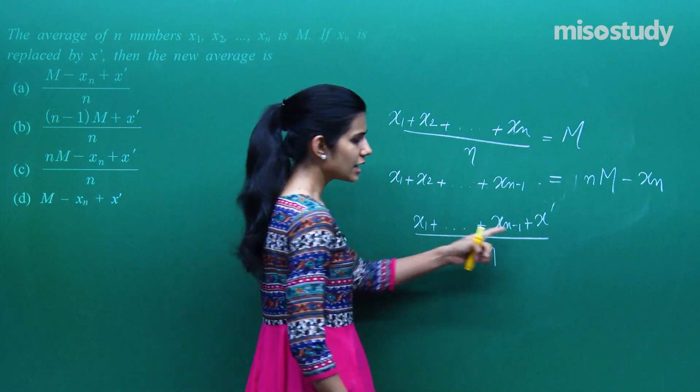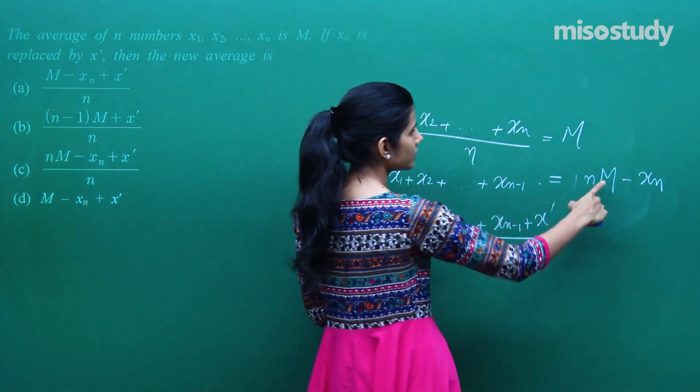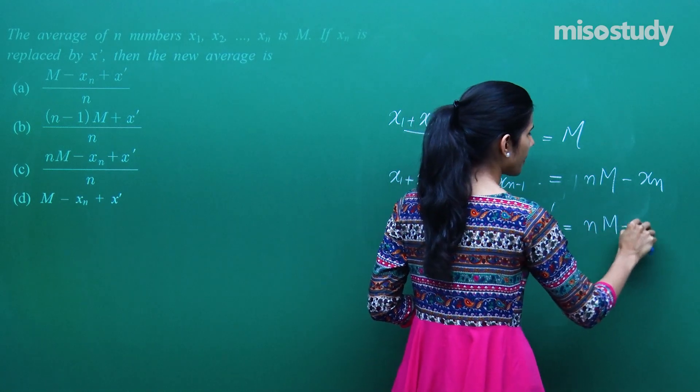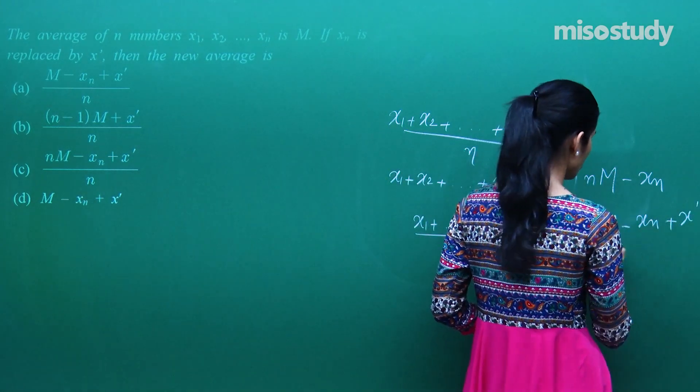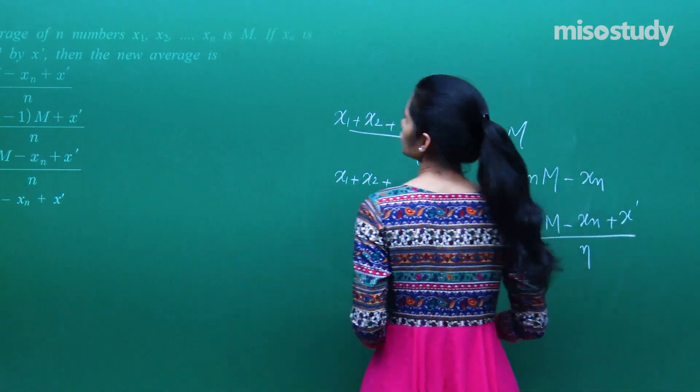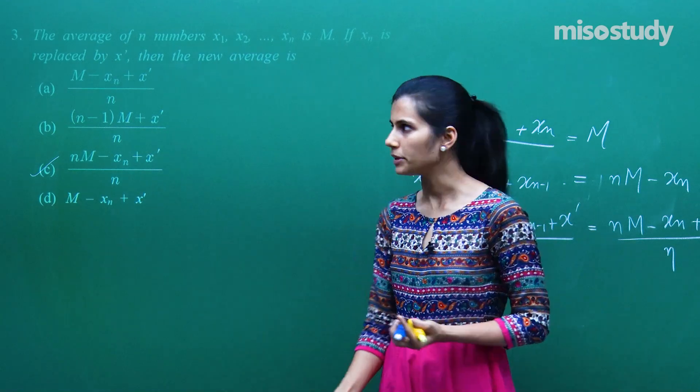Average kya ho jayega? Uska sum whole upon n. x1 se xn minus 1 tak toh sum kya hai? NM minus xn plus x dash whole upon n. So NM minus xn plus x dash whole upon n is your new average or new mean.